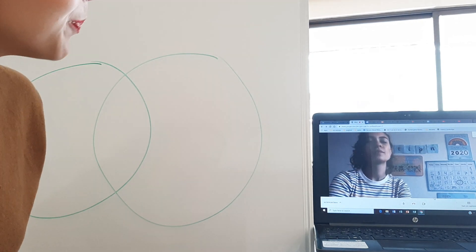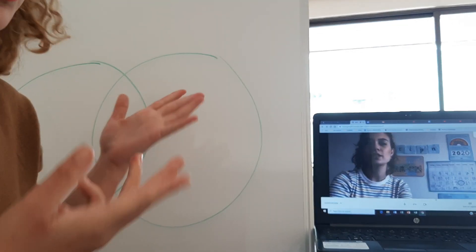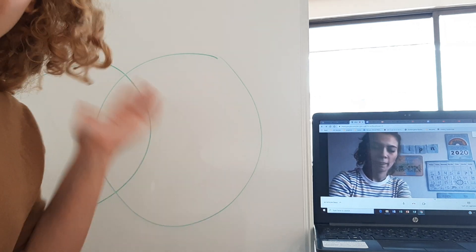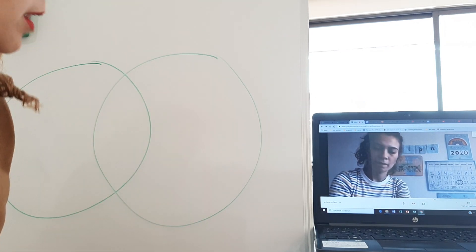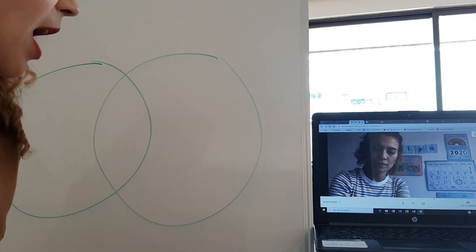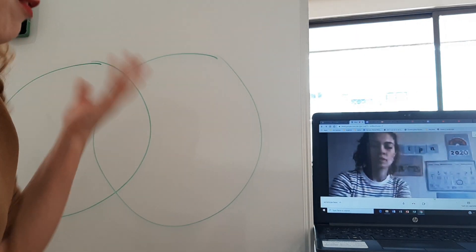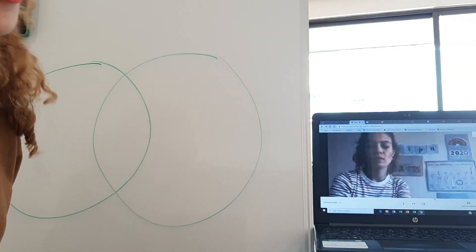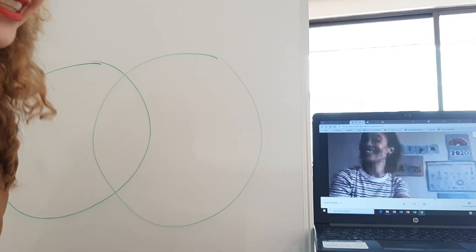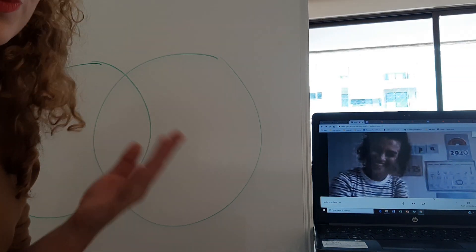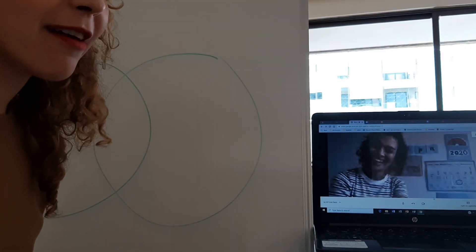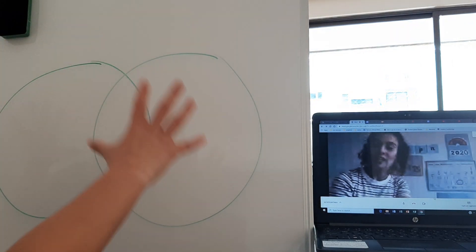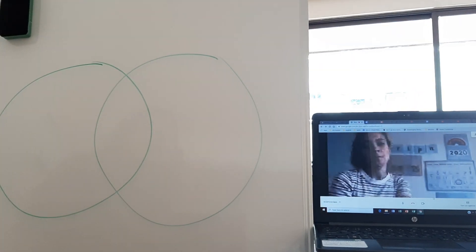So sometimes even when we have a lot of similarities with a person, we can still have a lot of differences. For example, me and Miss Stephanie — we're both teachers, we both work in year one, we both have curly hair — a lot of similarities. But you will see also that we have some differences.